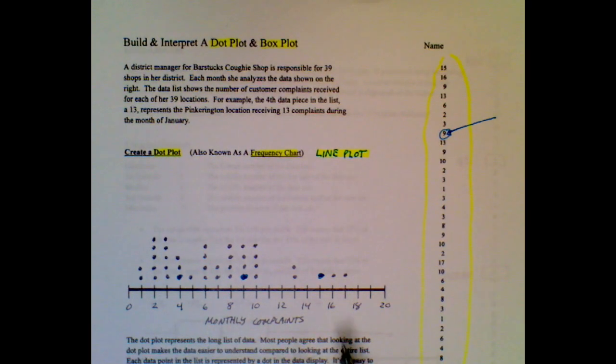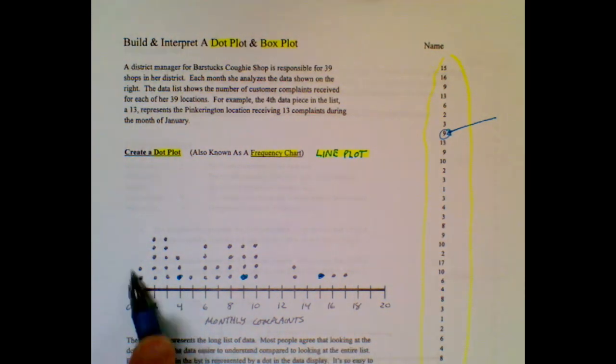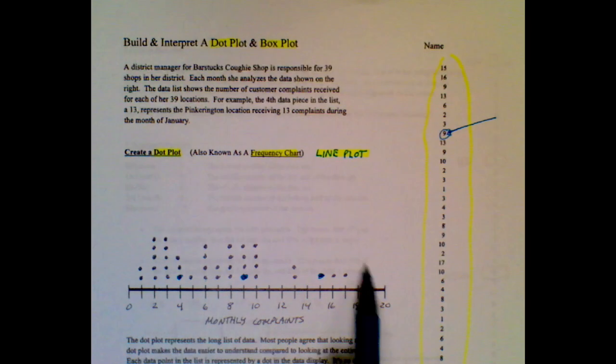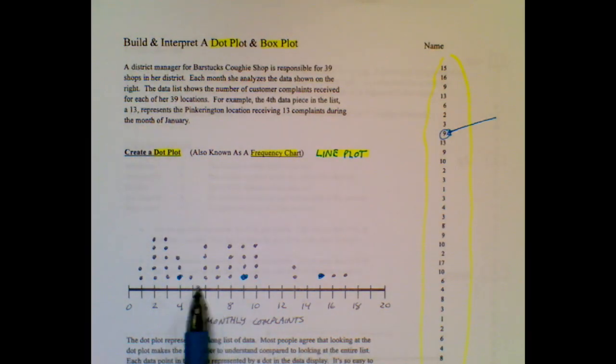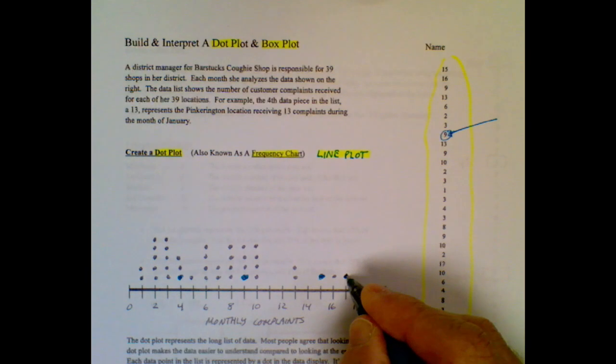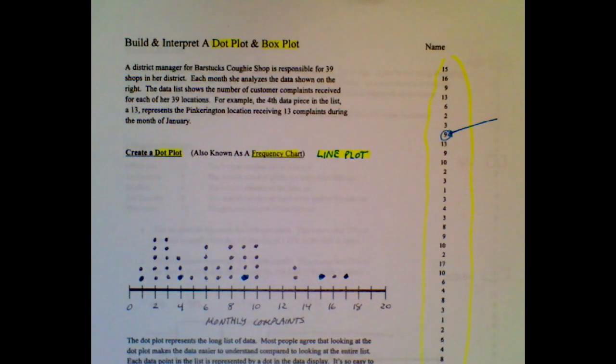So now it's very easy to say that if you are a location that had say 15 or 16 complaints, your eyeballs tell you right away you have more complaints than most of the places. If your coffee shop had six complaints, that tells you that just by quickly looking at this dot plot, that's pretty reasonable compared to what most of the other coffee shops are doing. Not so if you had 16 or 17 complaints. And by the way, now you can easily see the biggest data point, the smallest data point. So a dot plot is just a way to turn this list of data into a pretty picture.